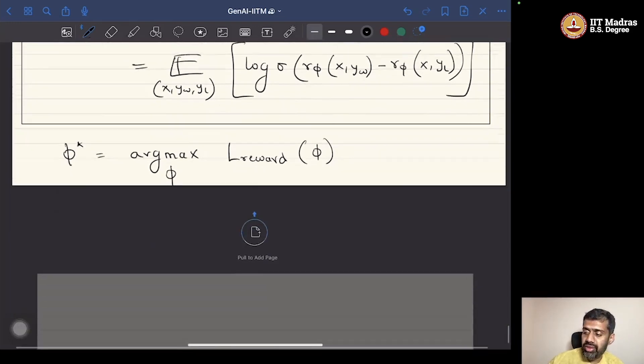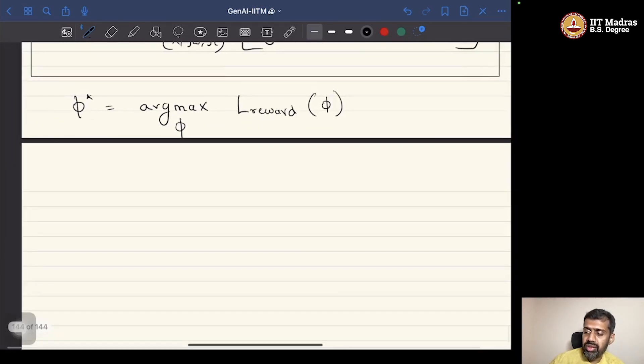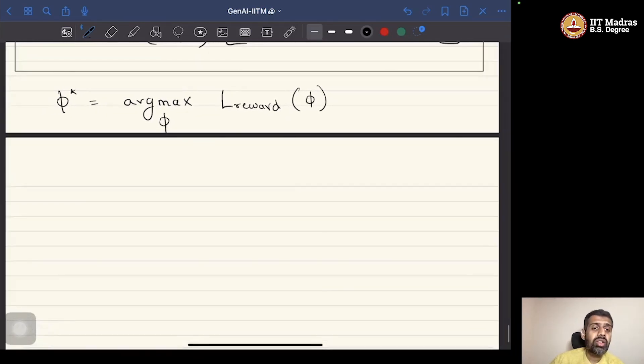So, now, once the reward model is trained, what do we do next is that we use that reward model for policy optimization via the policy gradient theorem using PPO kind of algorithm. This is what is done.